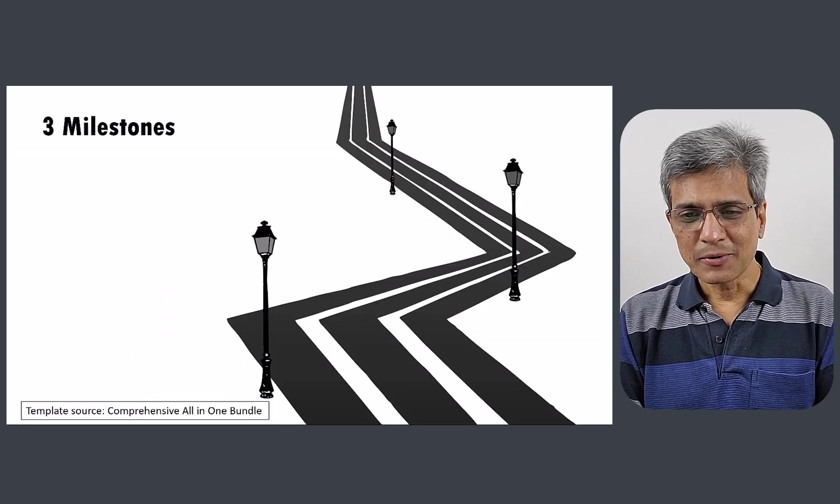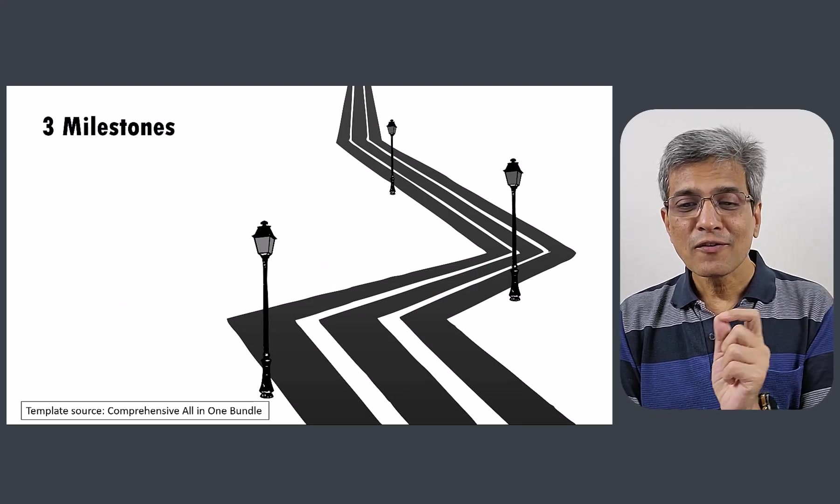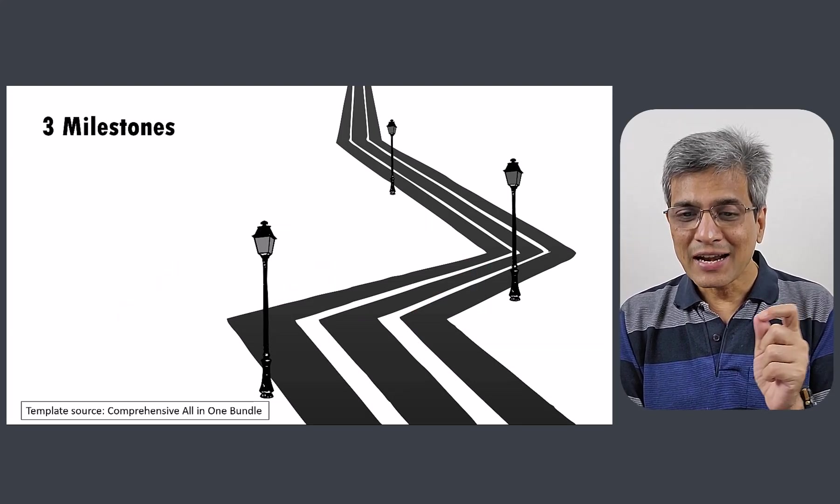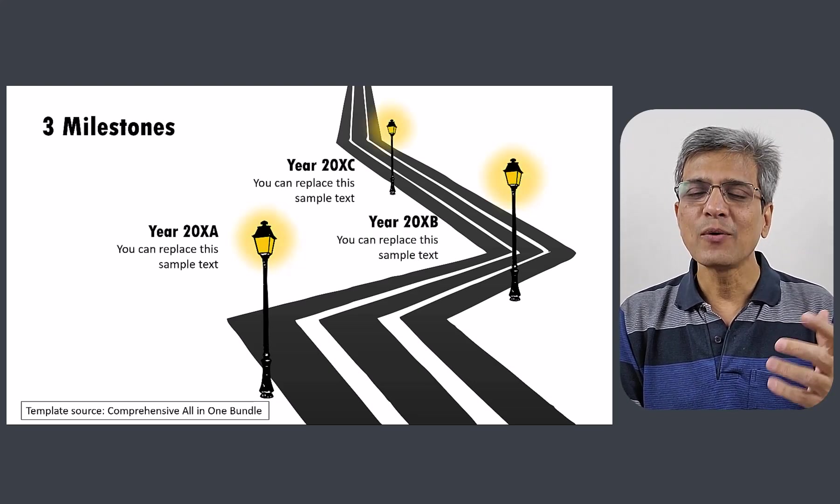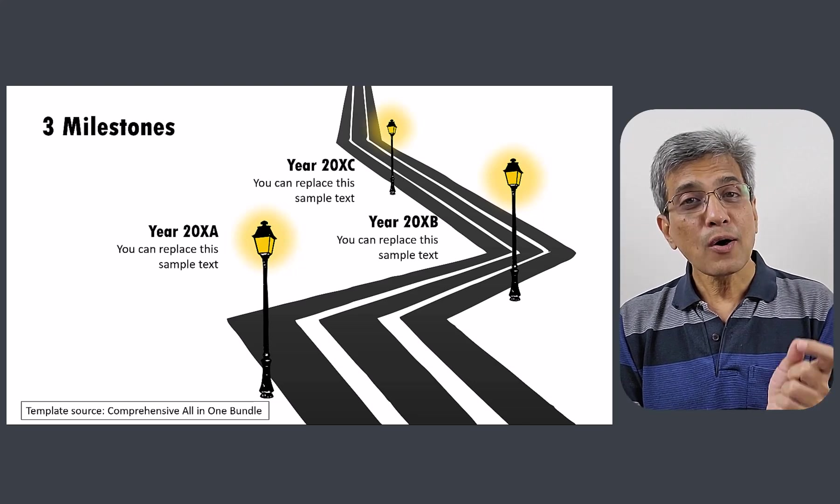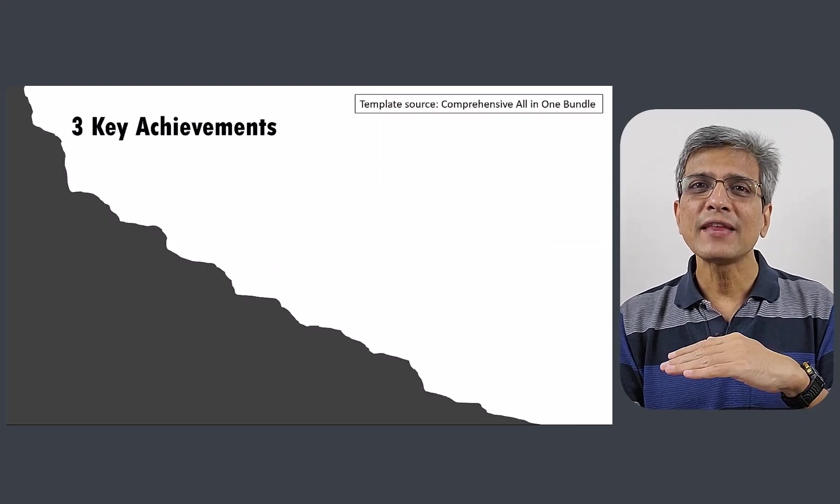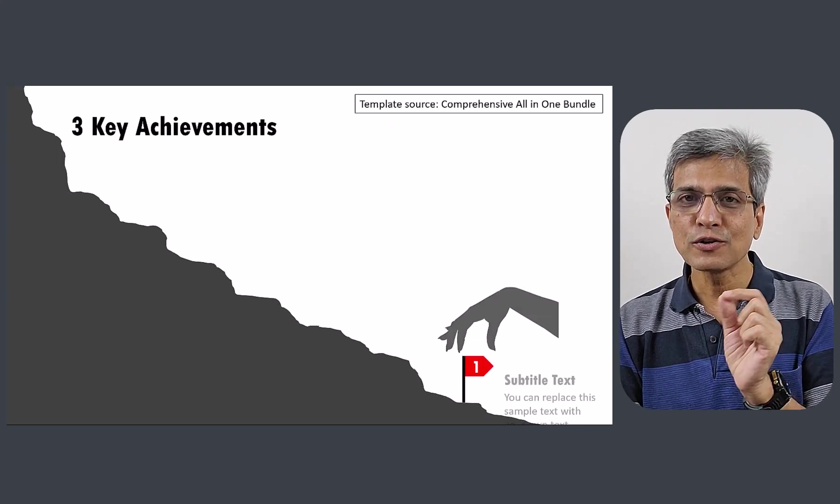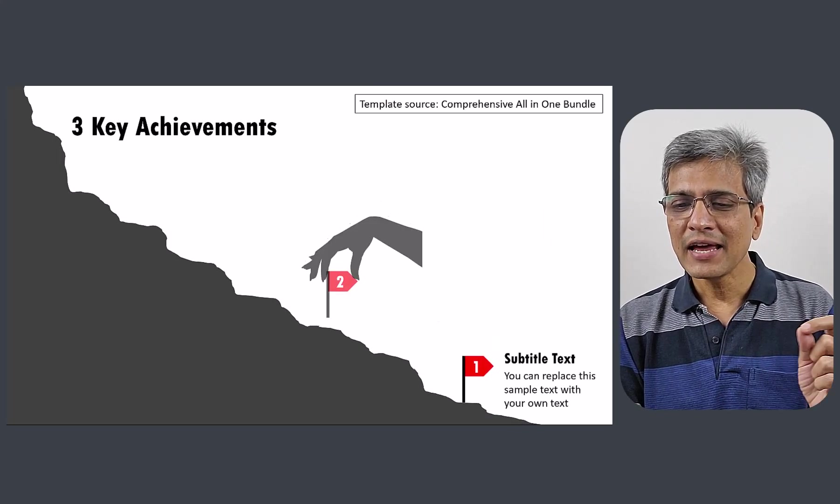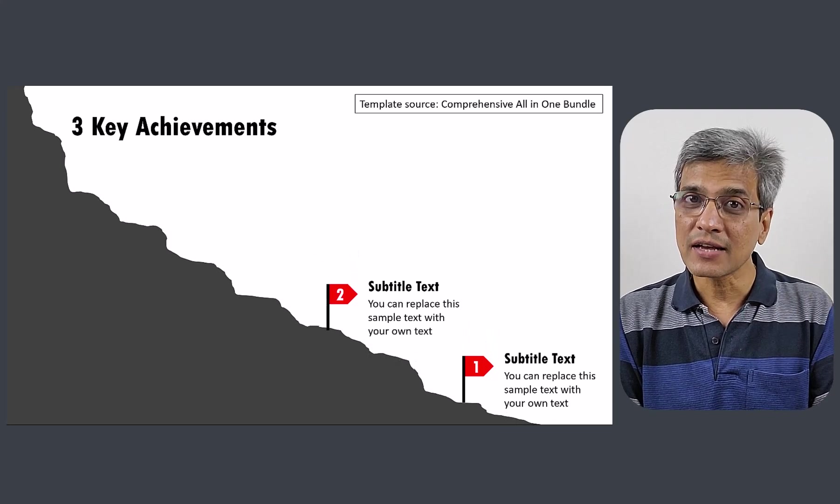We just need to add the relevant labels and we can tell our story. Now, look at this example. Instead of those three circles, you have got three lamp posts. And those three can represent three events along the road or the timeline. And we have an interesting looking slide. Now, look at this slide. Instead of that flat road, now we have an uphill task. And each of those milestones is now replaced by these flags, which are the achievements along the path. And we have an interesting diagram.